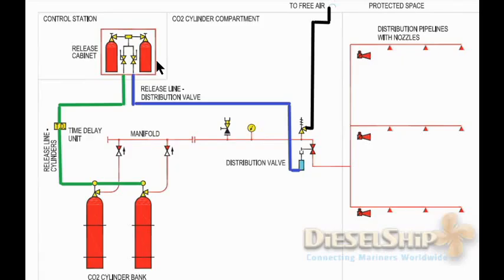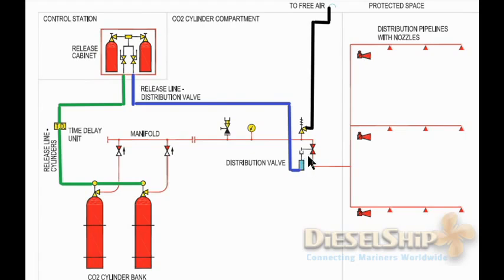The release cabinet has two pilot cylinders enclosed inside a cabinet with a door. Once the door is opened, it gives audible and visual alarm and may also trip ventilation fans and stop fuel pumps — it varies by ship, but it must definitely give audible and visual alarm and stop the ventilation fans. We have two bottles, but we always use only one; the other is a spare. There is a valve to open, and then two valves: the green line opens the main CO2 bottle valve mechanism, and the blue line opens the main distribution valve inside the CO2 room.